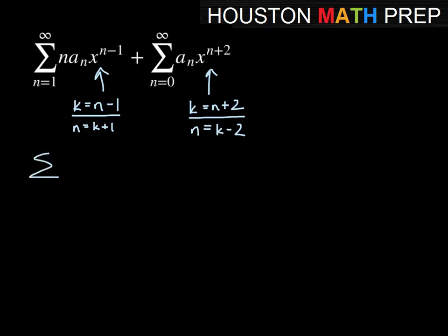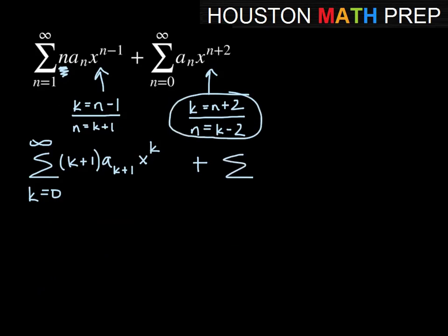The first series: since k is n minus 1 and n starts at 1, k starts at 0 to infinity. There's an n in this series which becomes k plus 1, a sub n becomes a sub k plus 1, and x to the n minus 1 becomes x to the k. For the second substitution: the sum starts at n equals 0, so 0 plus 2 gives k equals 2 as our starting index. Then a sub n becomes a sub k minus 2, and x to the n plus 2 becomes x to the k. We've made our powers match - both power series now have x to the k.